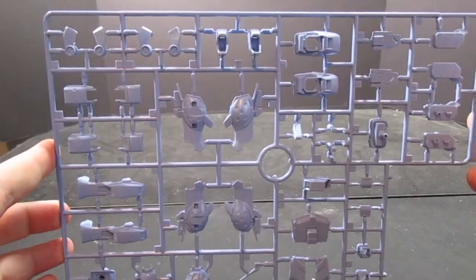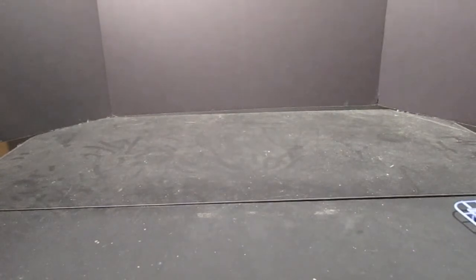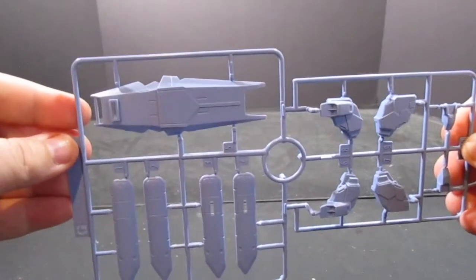Moving on to the plates, here we have the main body in blue, kind of a light blue. Here's one of the new plates for the space type, which includes the shoulders and the shield.